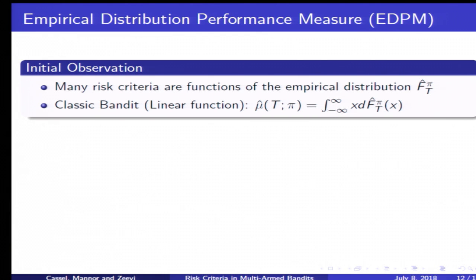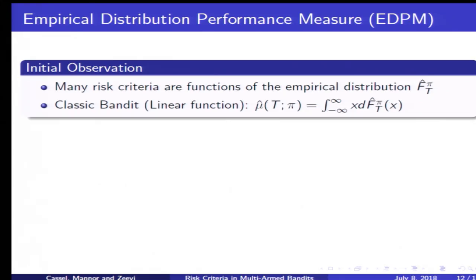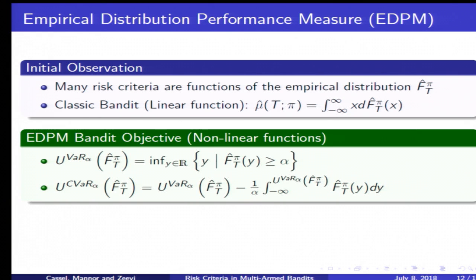So how do we achieve this generally? The initial observation we make is that the objectives I just mentioned, as well as various others, may be described as functions of the empirical distribution. In the case of the classic bandit, this function is simply linear and this really simplifies the analysis. In the general case, we want to consider a non-linear function, and we call this general class empirical distribution performance measures, or EDPMs.